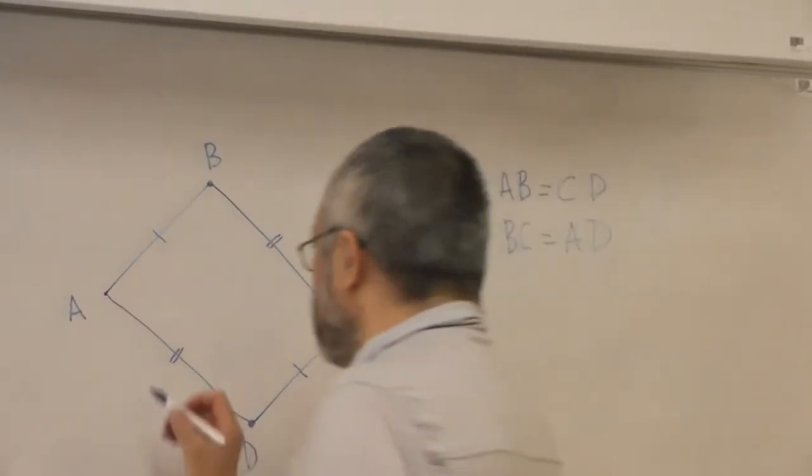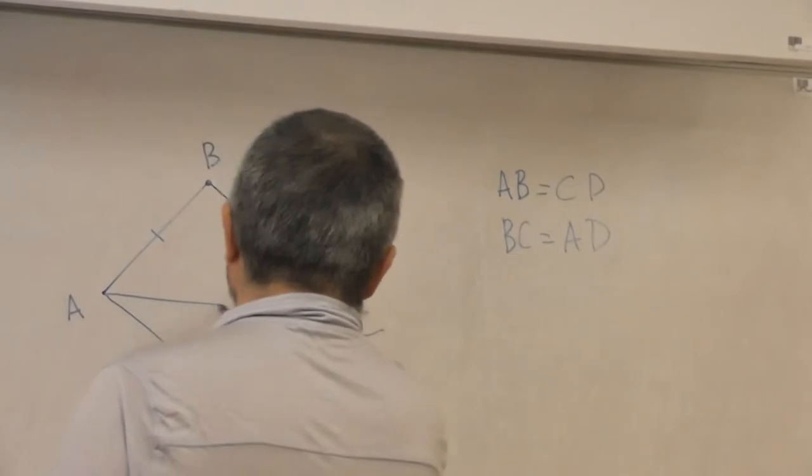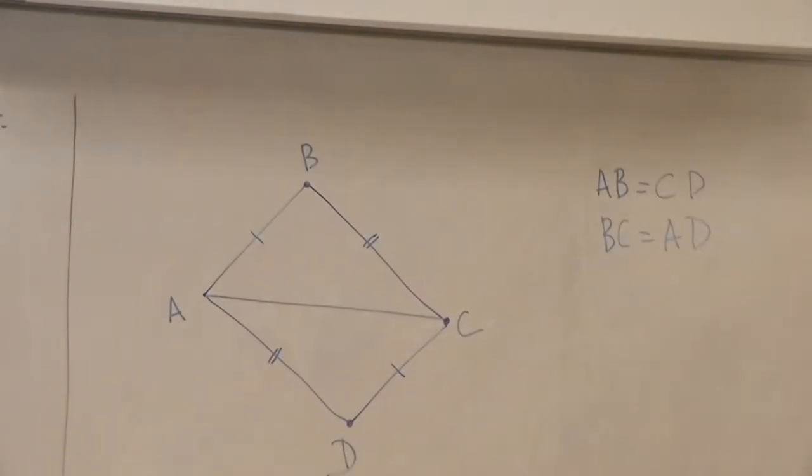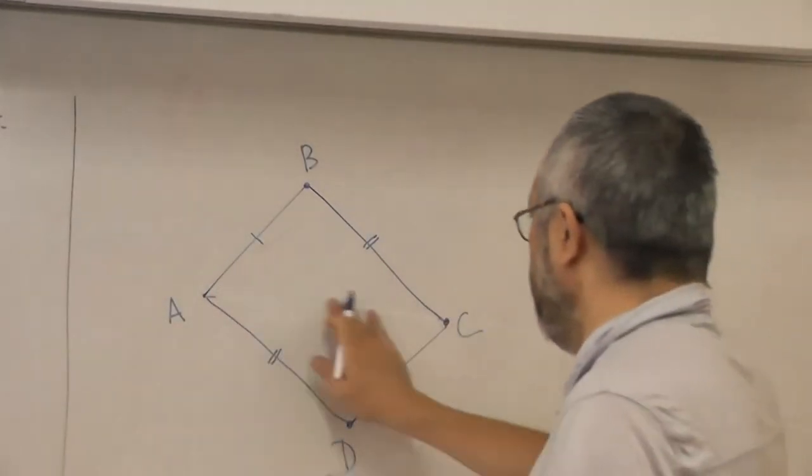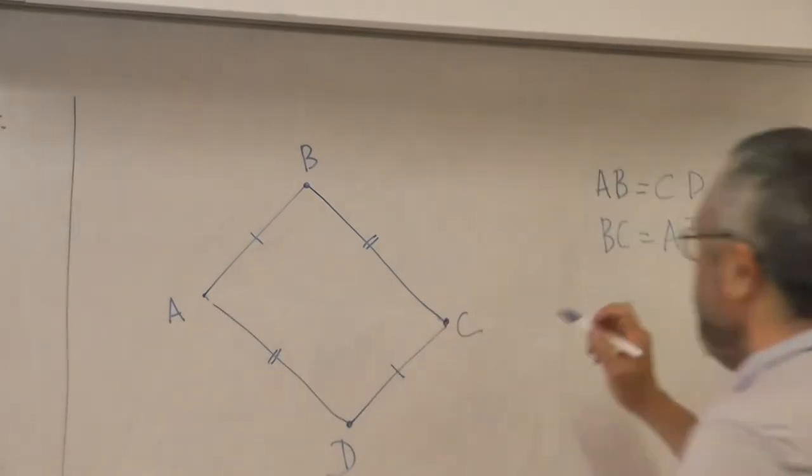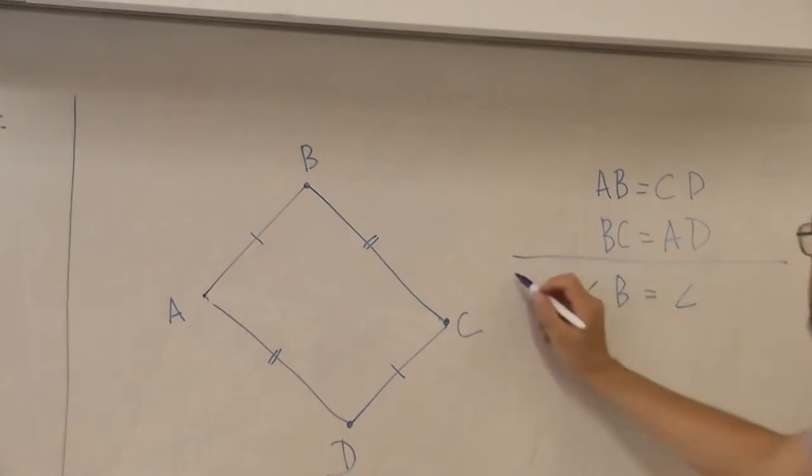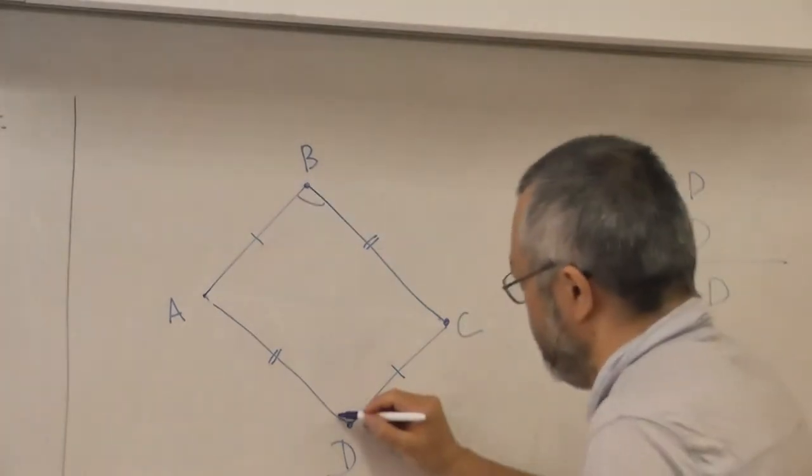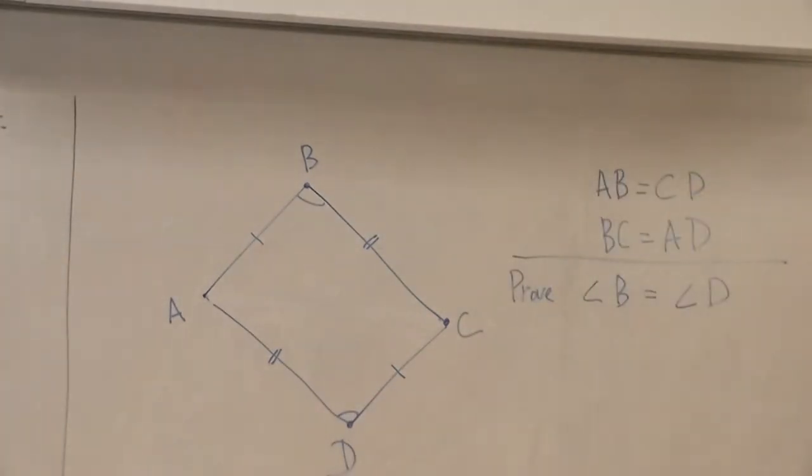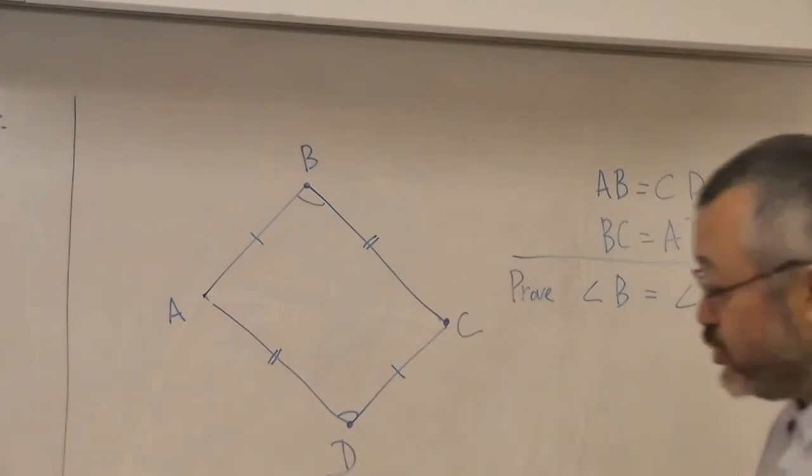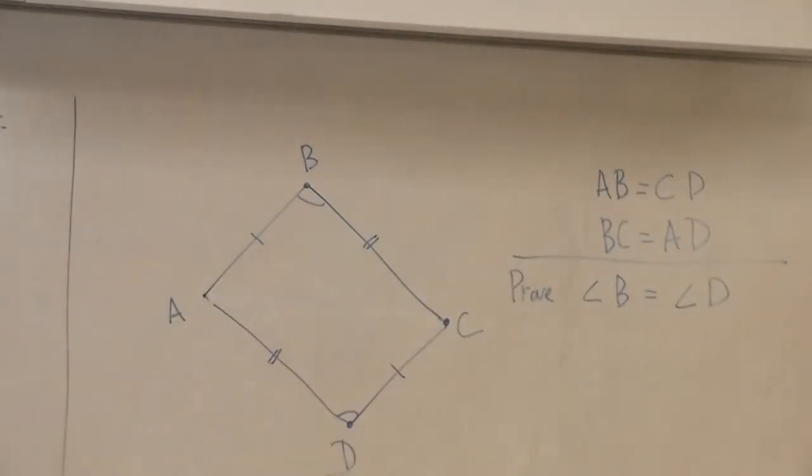And what we need to prove that the angles are the same. Okay, let's prove that angle B is equal to angle D. This is equal to this. We have to prove that angle B is equal to D.